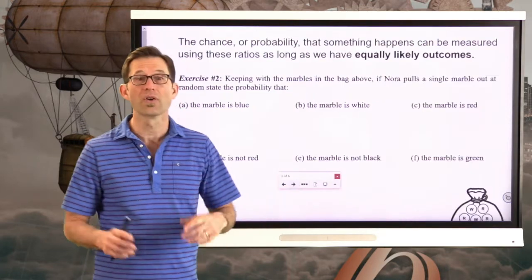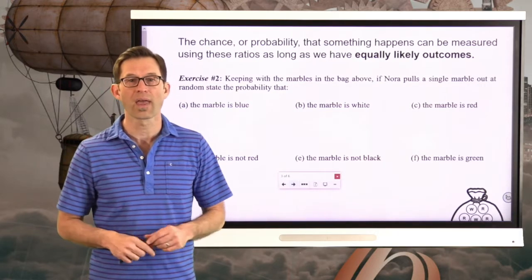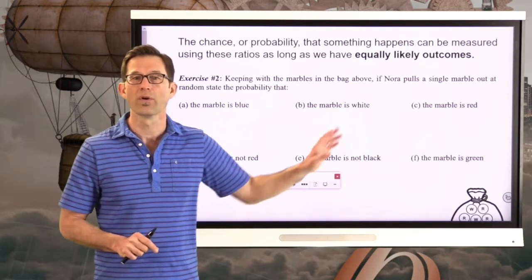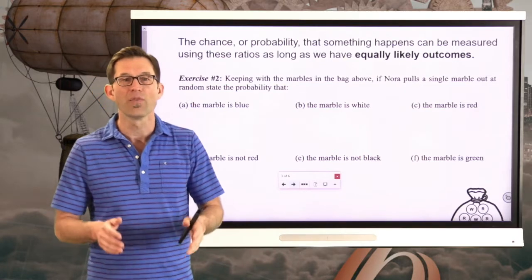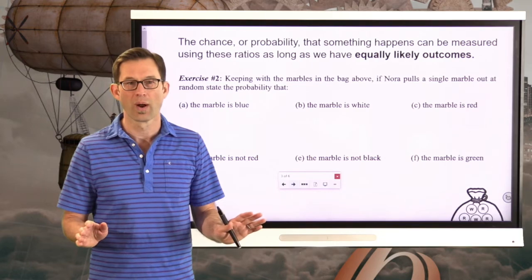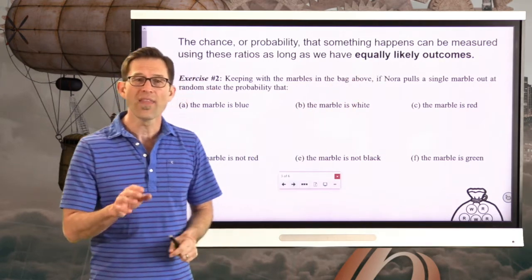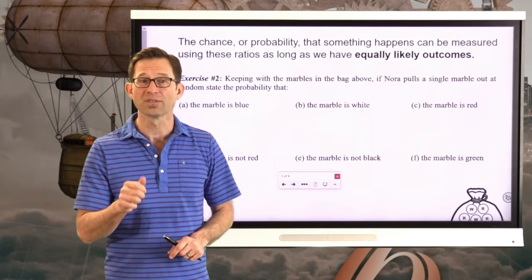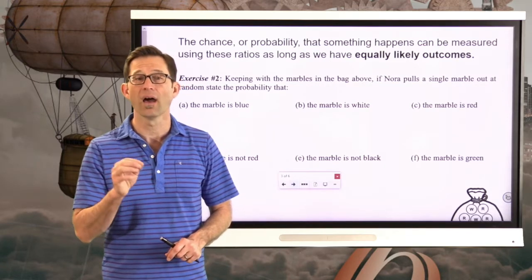The chance — or what we call the probability — that something happens can be measured using these ratios, as long as we have what are known as equally likely outcomes. You're going to hear that term a lot in Math 6 probability and every other time you deal with probability in future math classes. In that last problem, every one of the marbles, being the same size, was as equally likely to be pulled out of the bag as any other marble.